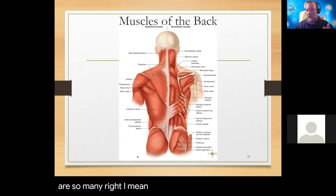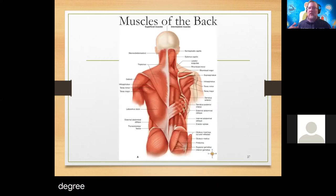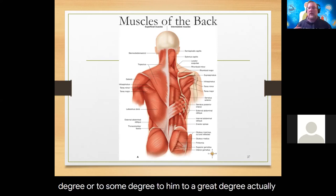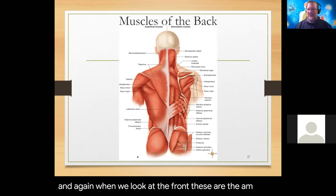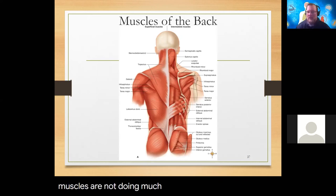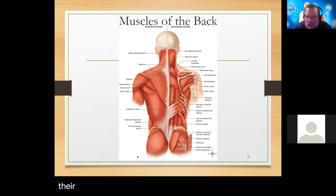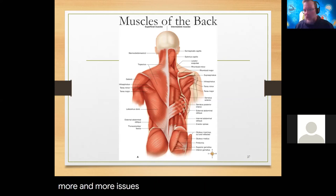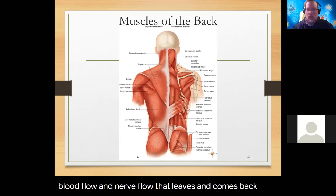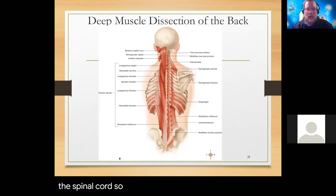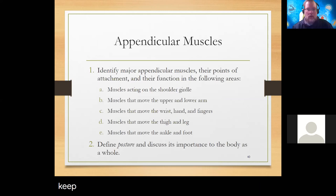Every single muscle of the back is responsible for posture to some great degree. When we look at the front, these anterior muscles are the antagonists of all the back muscles. If the back muscles aren't doing much, the front muscles do a lot of the work. Nowadays people are driving, on tablets, sitting at desks - everything is in front. We're seeing more issues with posture and with blood flow and nerve flow to and from the spinal cord.